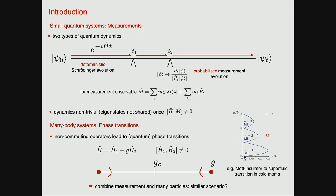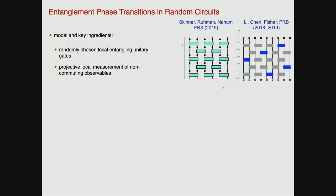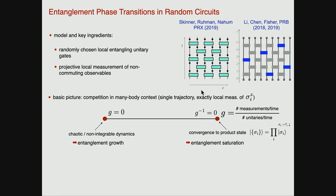The question of measurement-induced phase transitions can also be formulated as: put in a many-body system two sets of operators into competition — a Hamiltonian and measurement operators — that both want to push the system toward different structure in their eigenstates. Then we ask: is there a phase transition and how does it look? This has been pioneered in random circuits. The problem is very easily structured: the dimensionless parameter between the non-commuting operators in this problem is the number of measurements per unit time versus the number of unitaries thrown onto the system per unit time. When g is zero (no measurements), one has non-integrable chaotic evolution leading to entanglement growth. Conversely, if you have no entangling dynamics, the measured system collapses into a product state — you see entanglement saturation.